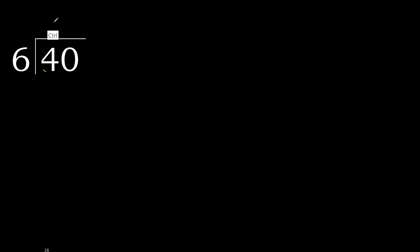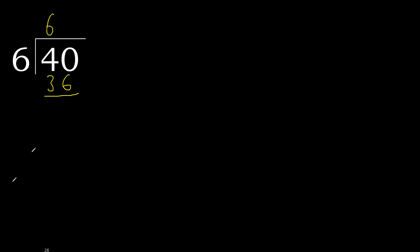6 multiplied by 6 is 36, which is not greater. 40 minus 36 is 4. Next — there is no number, therefore complete. Always complete with 0.